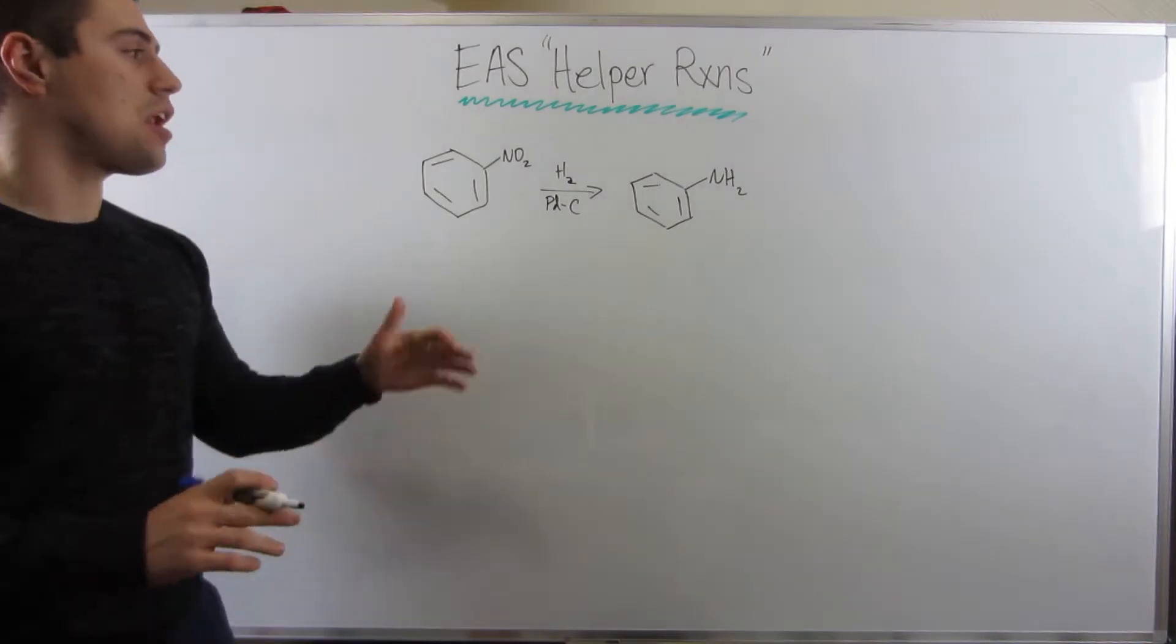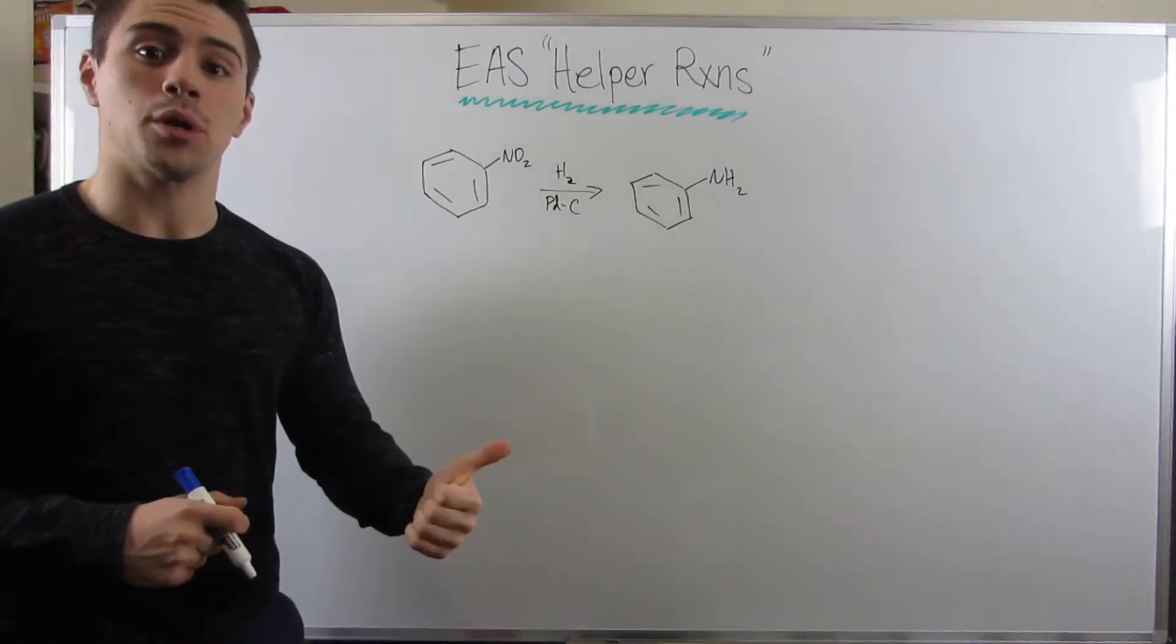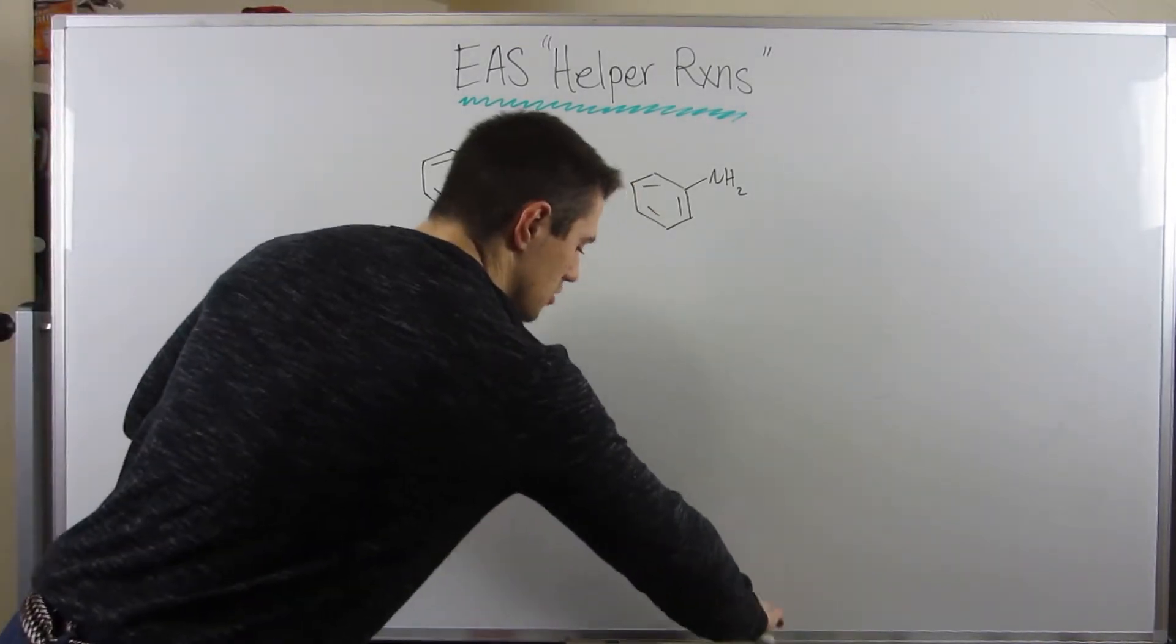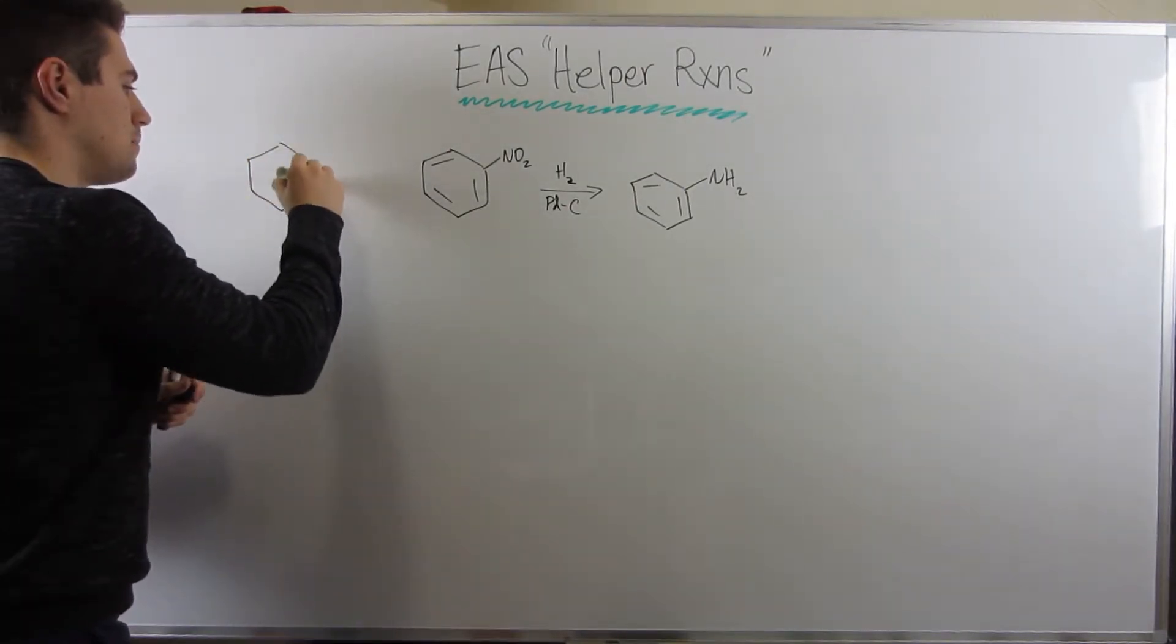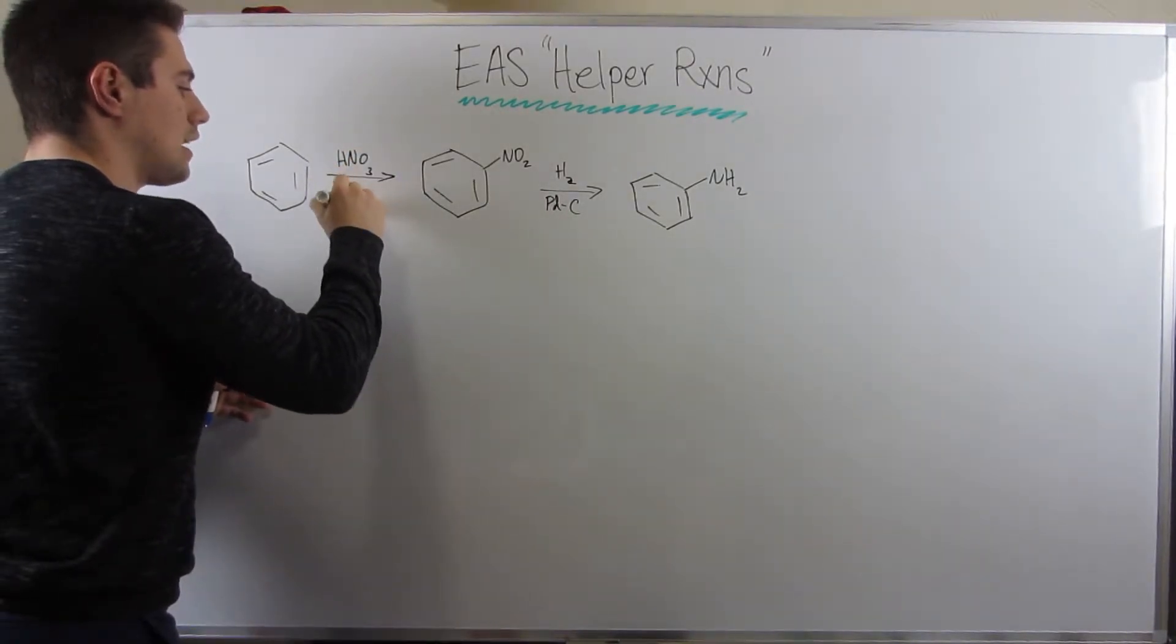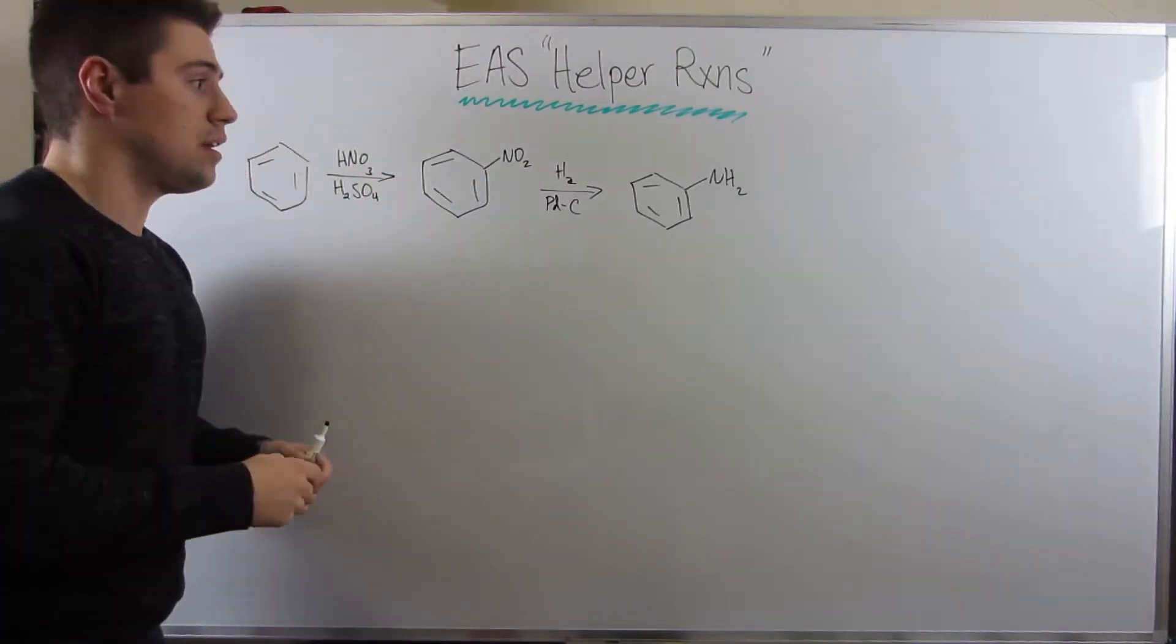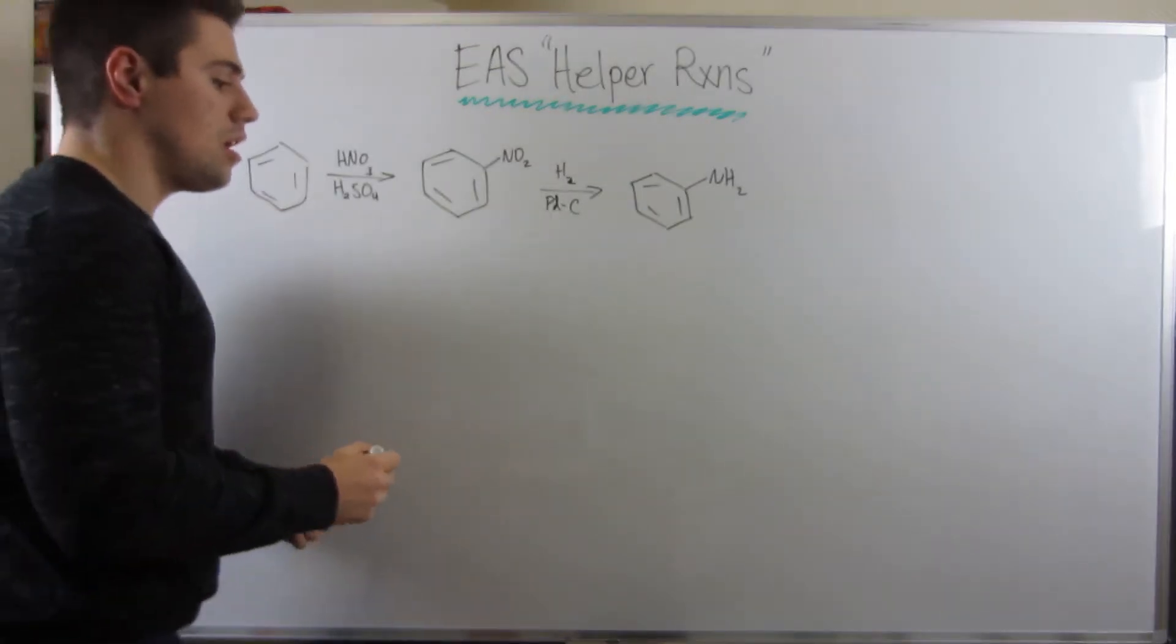Let's look at another reaction that's going to be extremely beneficial for our predicting the reaction purposes and our synthetic purposes. We know if we took a regular old benzene ring and we threw in some classic HNO3 and some catalytic H2SO4, then we can stick on a nitro group, an NO2. We know he's electron withdrawing, metadirector, all that jazz.